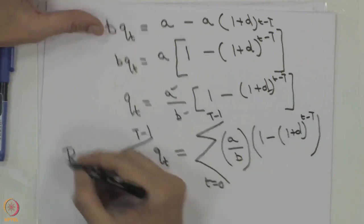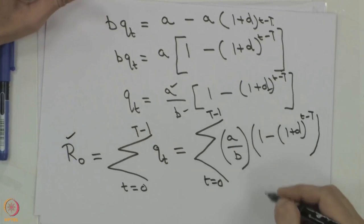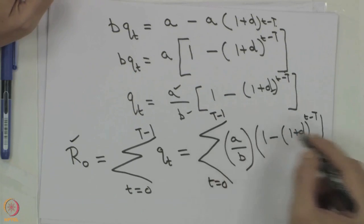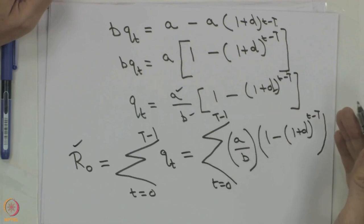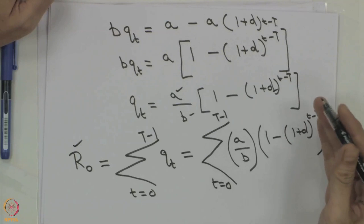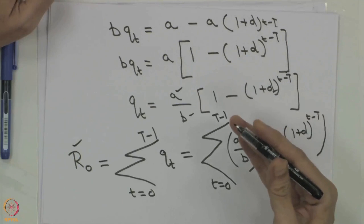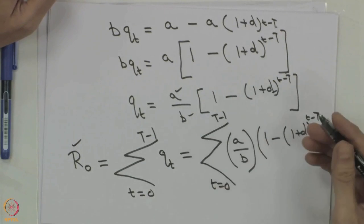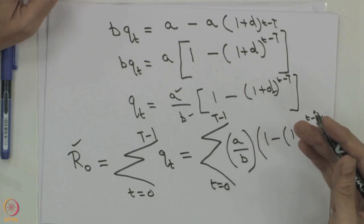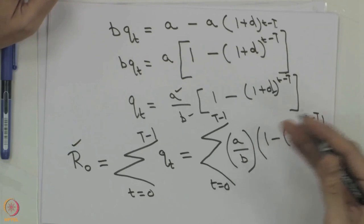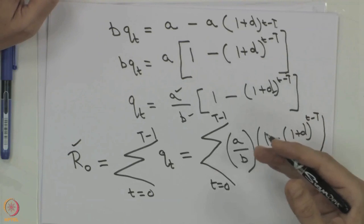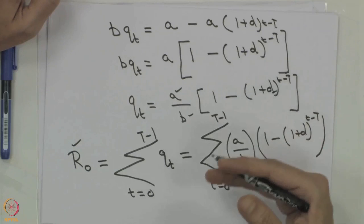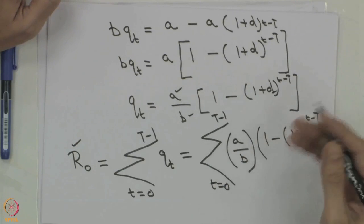We now have one equation: we know R0, we know A, we know B, we know d. The only unknown is capital T. This is a geometric progression—we can derive an expression for capital T in terms of coefficients A, B, R0, and d. Once we solve this, we have found the time of exhaustion and can get Qt and Pt as functions of time.